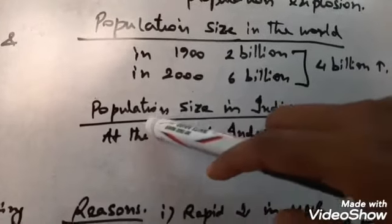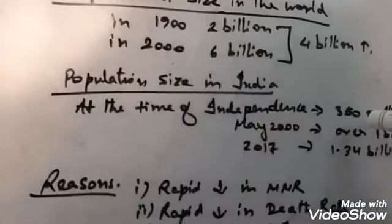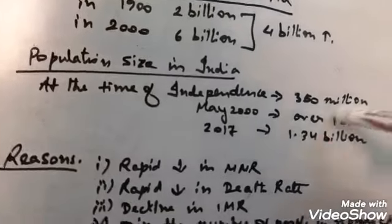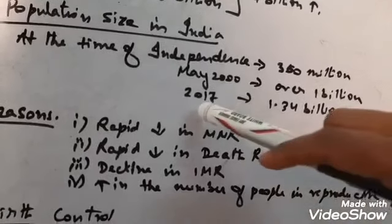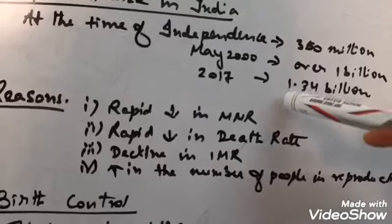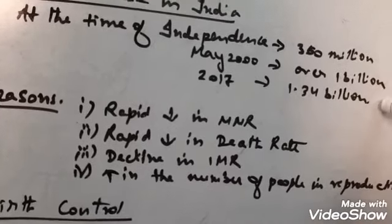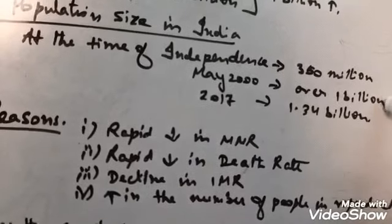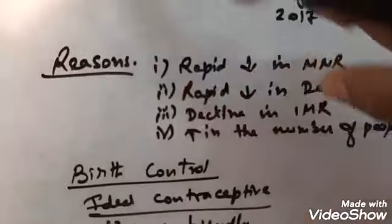Now, let us discuss about population size in India. In India, at the time of independence, it was only 350 million, while in May 2000, it was over 1 billion. And the recent one, that is of 2017 census, it is about 1.34 billion. So here you can see how rapidly the population is increasing.